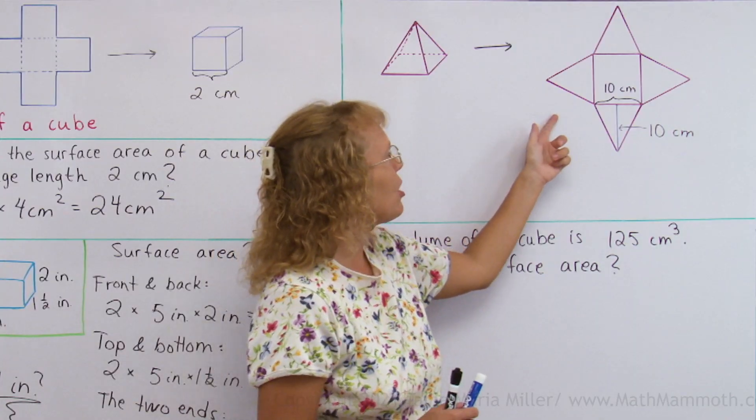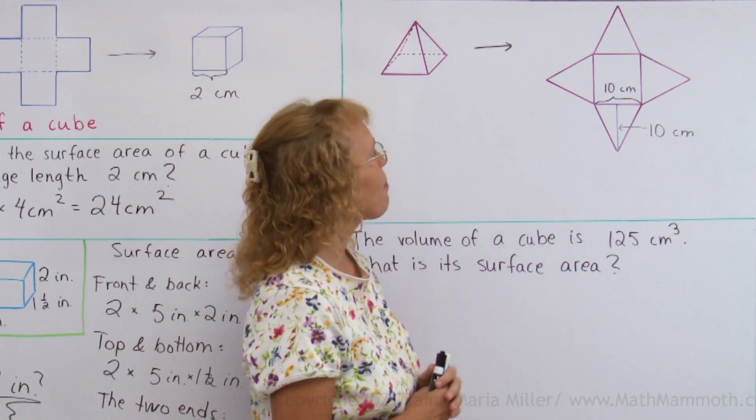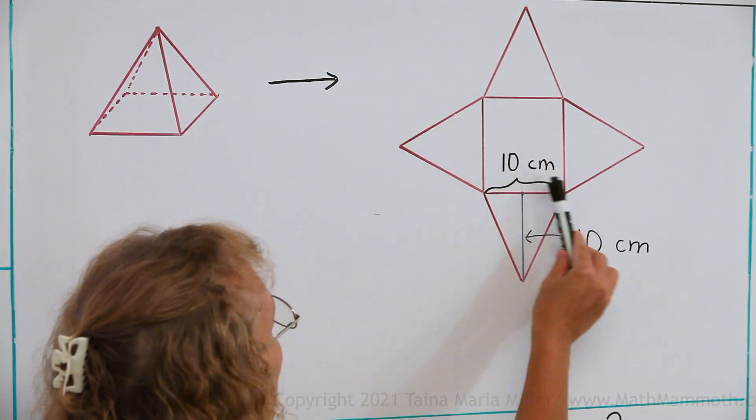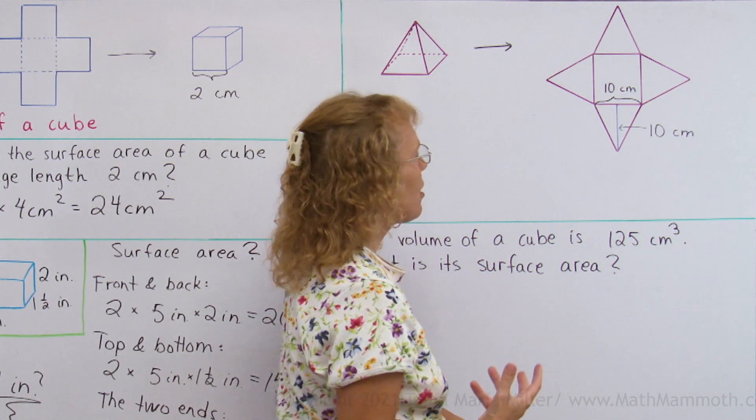And here is its net. Again, if I drew this on paper and cut it out and folded it, I would get the pyramid. You can see the bottom square here and then these triangles.